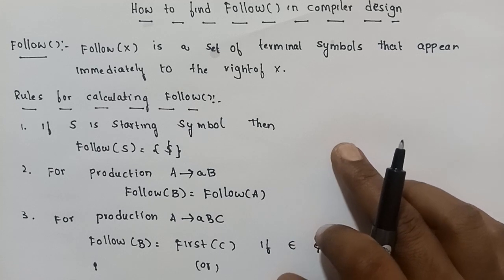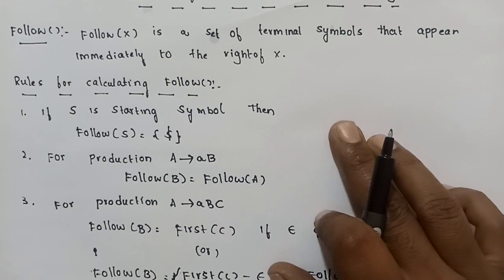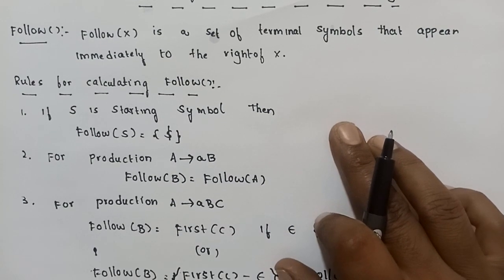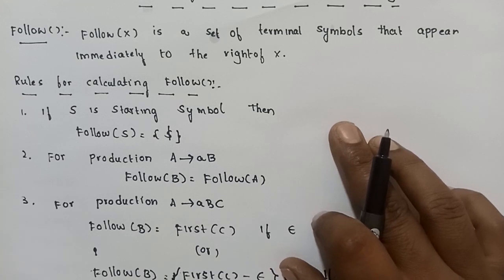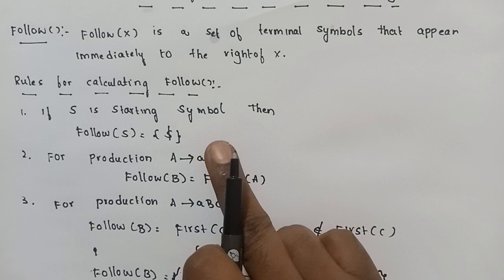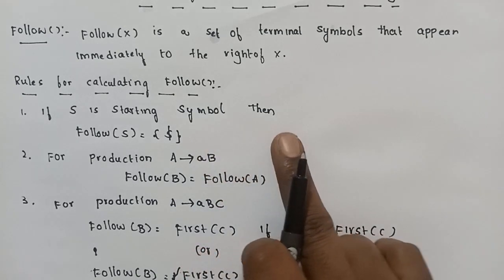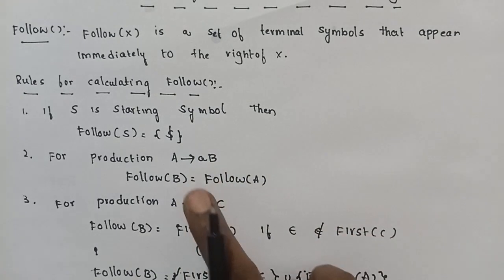There is a set of rules for the FOLLOW function. Suppose that symbol S is a starting symbol. Then, FOLLOW of S is equal to dollar. This is the first rule.